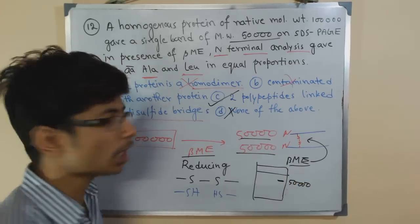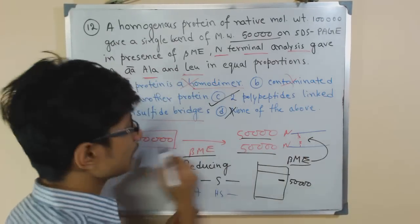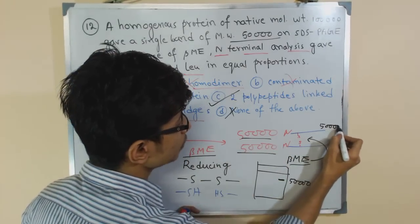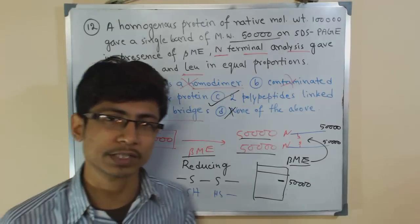And once you treat them with beta-mercaptoethanol, it breaks them from this region. As a result, previously this one, now it becomes 50,000 Dalton each. So that's how the whole system works guys.